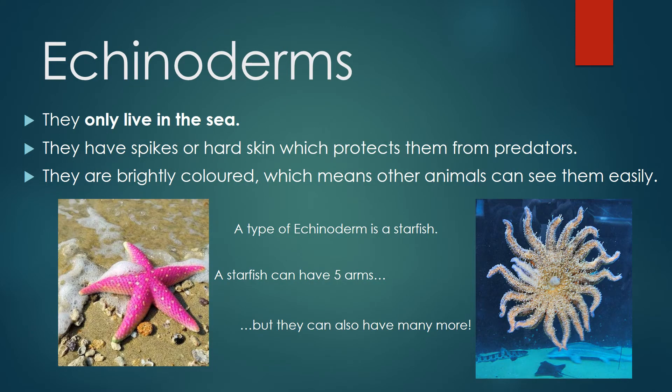Echinoderms. They only live in the sea. They have spikes of hard skin which protects them from predators. They are brightly colored, which means other animals can see them easily. A type of echinoderm is a starfish. A starfish can have five arms, but they can also have many more.